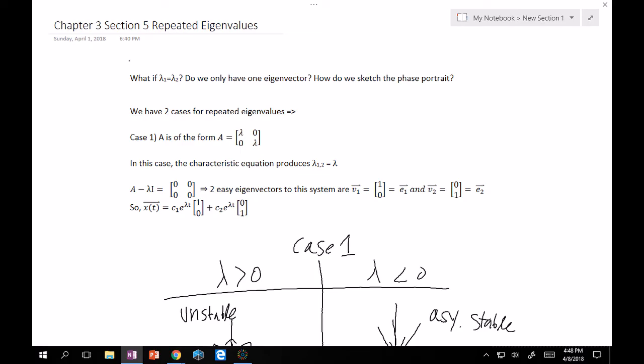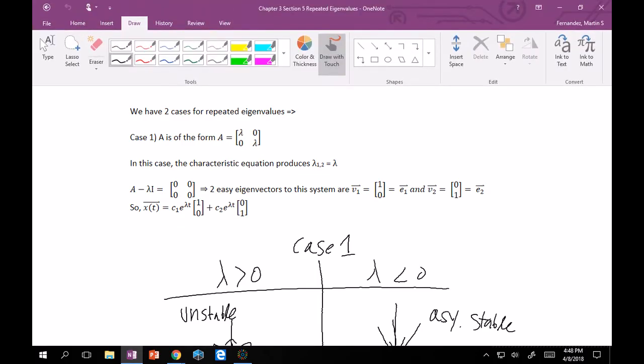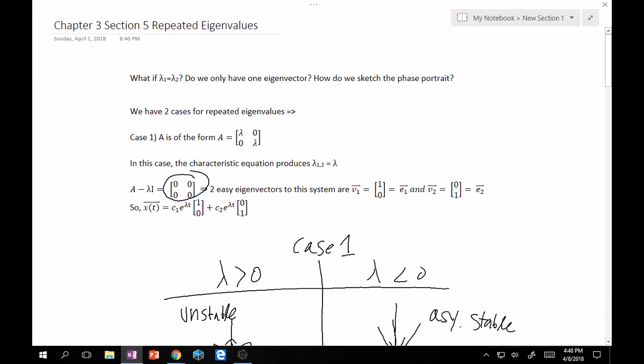Then the characteristic equation is 5 minus lambda squared has to equal 0. Therefore, the eigenvalue is 5 repeated. And so once you do A minus lambda I, you'll get the 0 matrix, so you'll get this. And so what this tells you is, okay, you need to find two eigenvectors that are linearly independent to each other that also satisfy that when you multiply them onto here, you get the 0 vector, right?